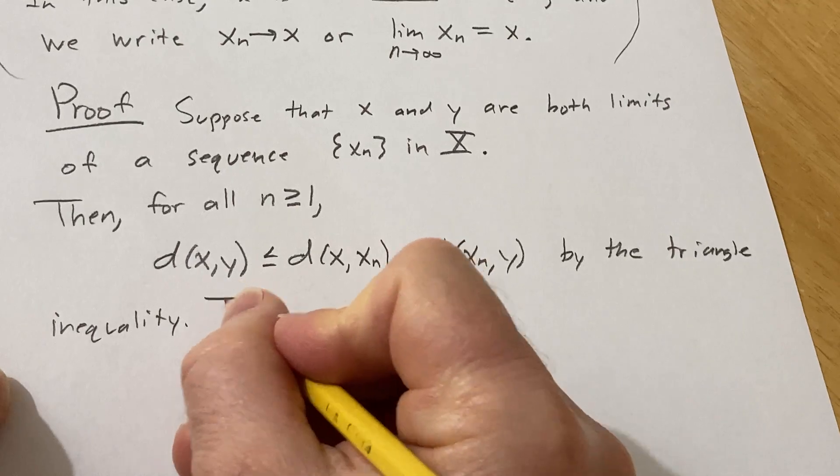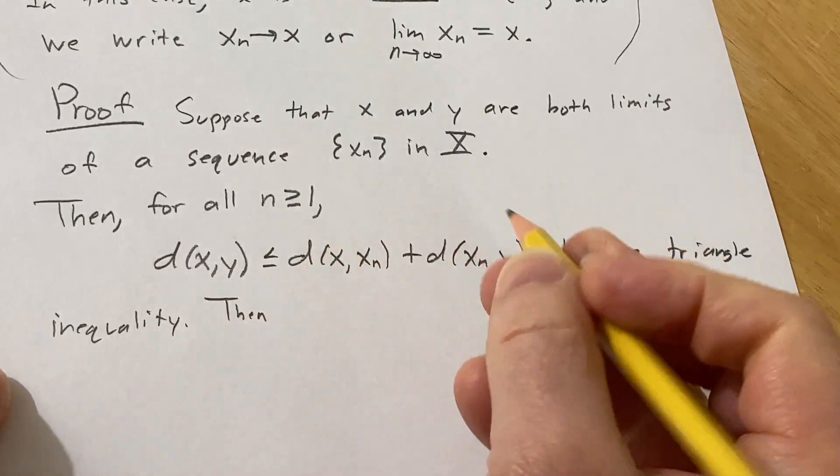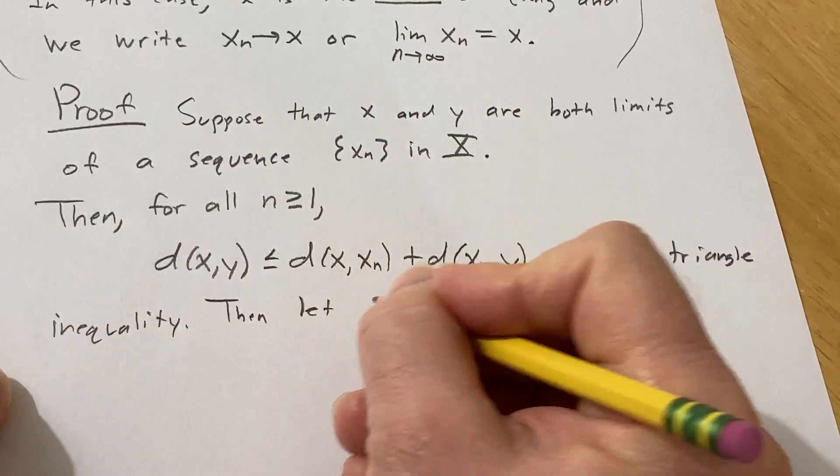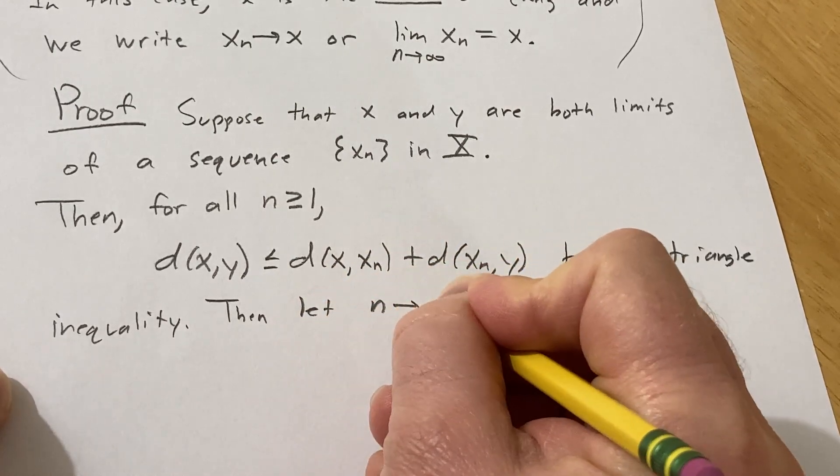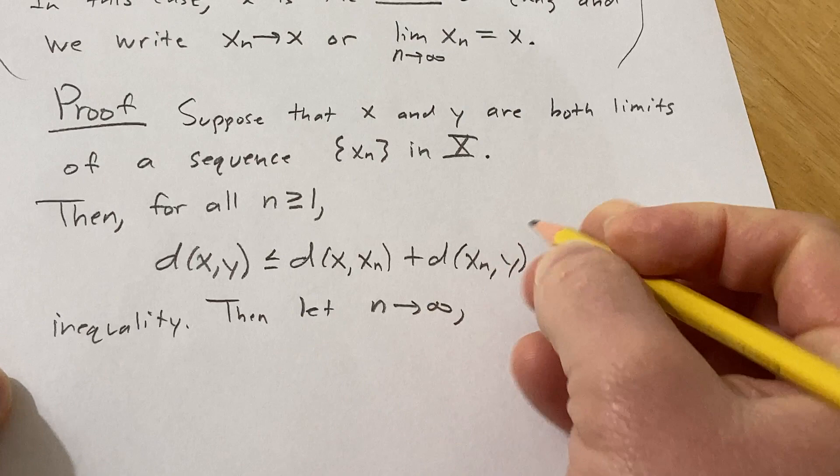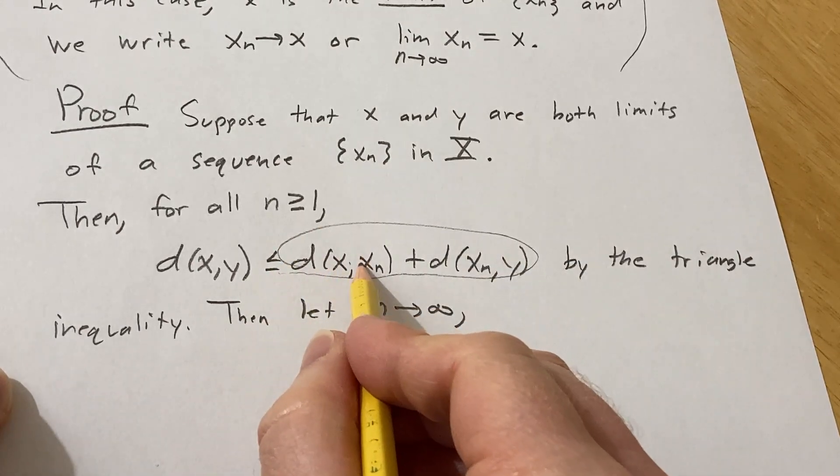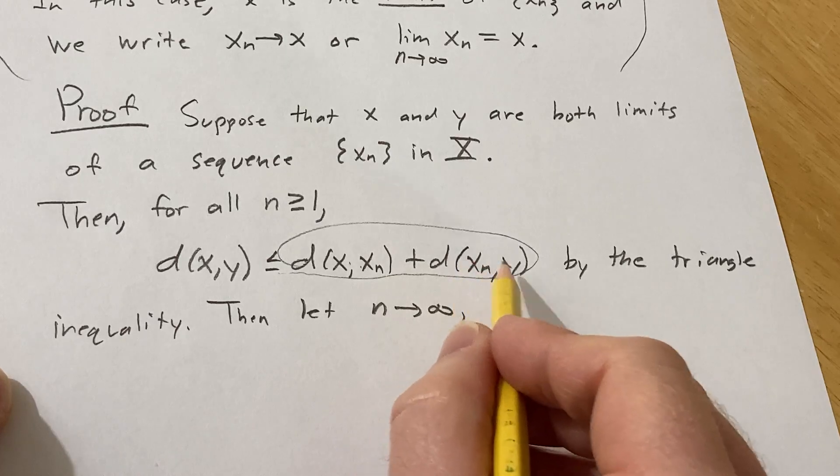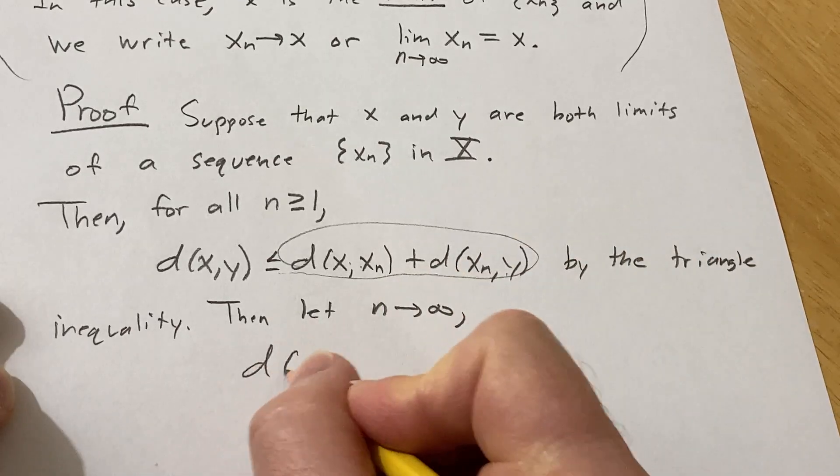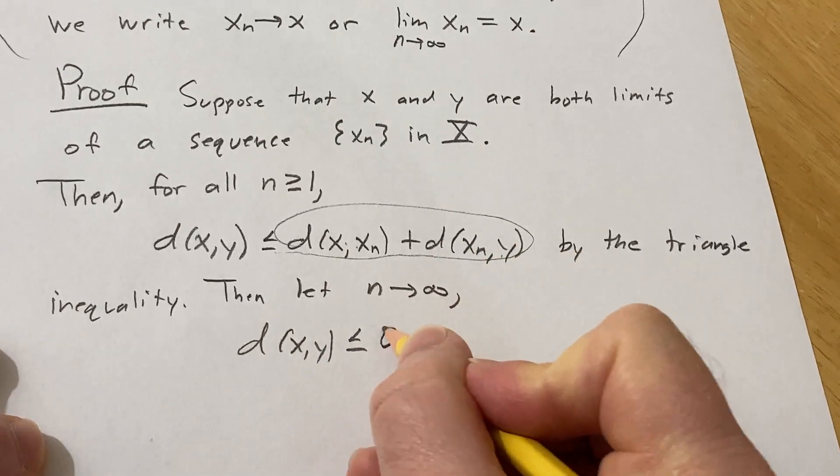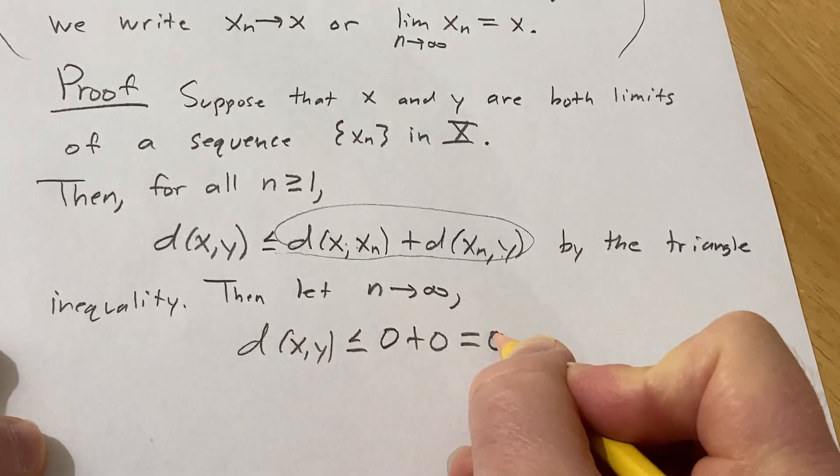So then, if we take the limit, so if you let n go to infinity, this pair approaches zero because this one converges to x and it also converges to y. So then we end up with d of x comma y is less than or equal to zero plus zero which is equal to zero.